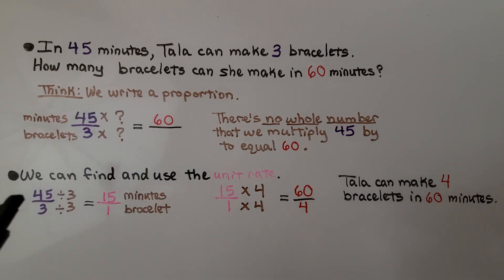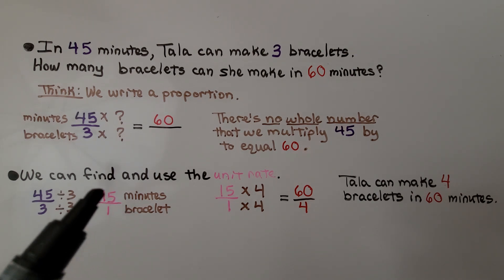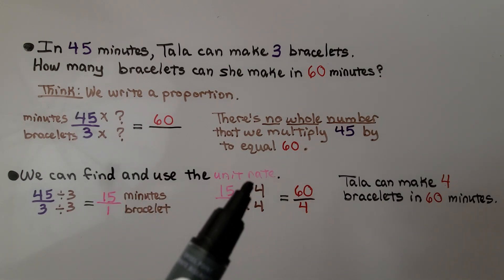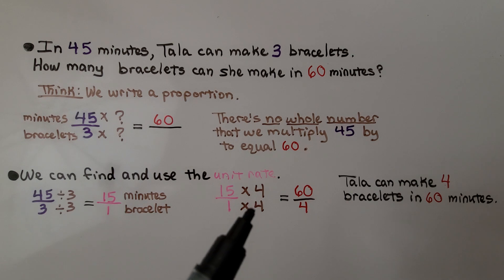We can find and use the unit rate. We can do 45 divided by 3 to get 15, or we can divide both terms by 3, because that's the denominator, to get a unit rate of 15 minutes with one bracelet. Now we can use this unit rate, and we ask ourselves 15 times something is 60. That would be 4. We multiply the 1 by the same thing. We know Tala can make 4 bracelets in 60 minutes.